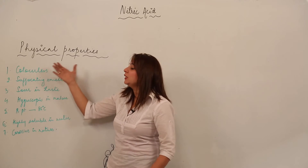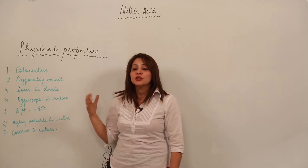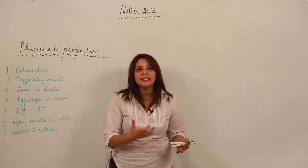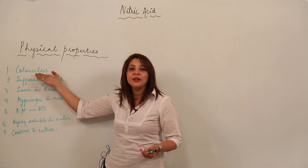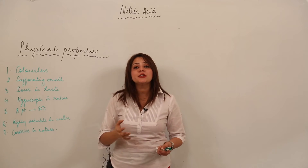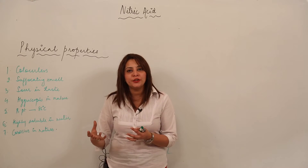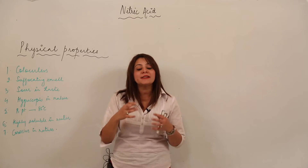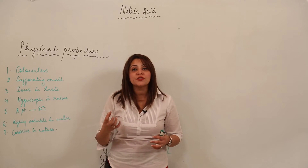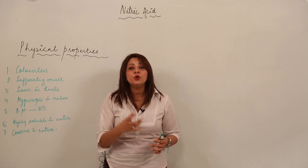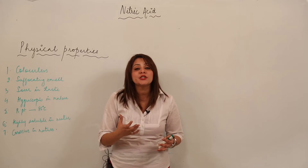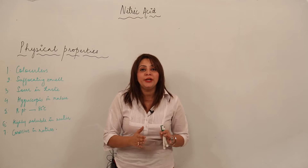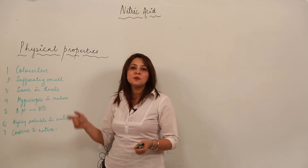We are going to start with the physical properties of nitric acid. Pure HNO3 is colorless, but when we keep HNO3 in bottles, whether stoppered or not, at high temperatures it undergoes self-dissociation to form NO2, which is reddish-brown in color. Due to this, we often see HNO3 as a pale yellow liquid, but otherwise HNO3 is colorless.